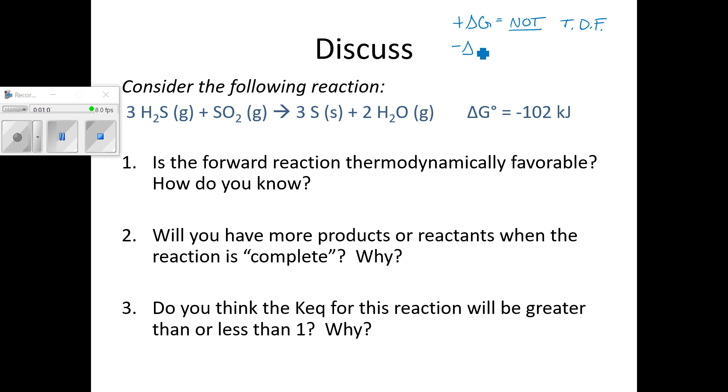If the reaction has a negative delta G value, then it is thermodynamically favorable. And thermodynamically favorable means there will be a net conversion of reactants into products spontaneously. So your reactants will spontaneously turn into products under those conditions. So it looks like for this reaction, our delta G is negative 102. So yes, it is favorable because of a negative delta G value. That's all you need to provide for your reasoning. You just say, because delta G is negative, that's it.